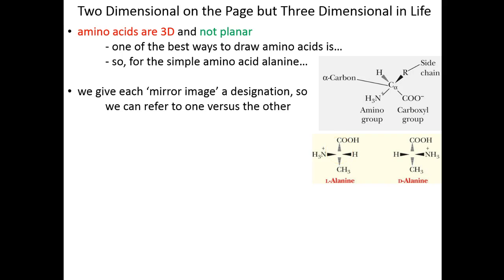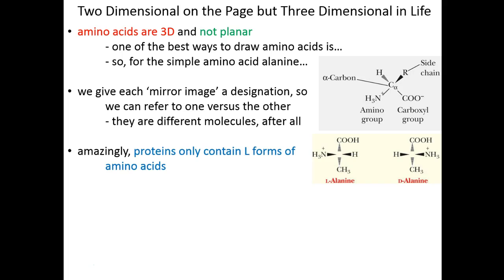Because these are chiral and these are not superimposable mirror images, we designate the two different mirror image forms so that we can refer to them one versus the other. And we use the terms L and D. L, you might have learned in chemistry, is a left-handed chiral molecule and D is right-handed. Amazingly, our proteins only use L-form amino acids. L-form amino acids are the only ones used in living cells in this planet.